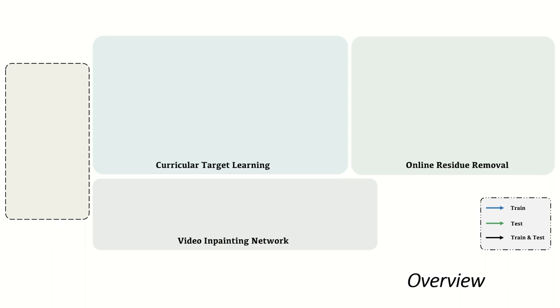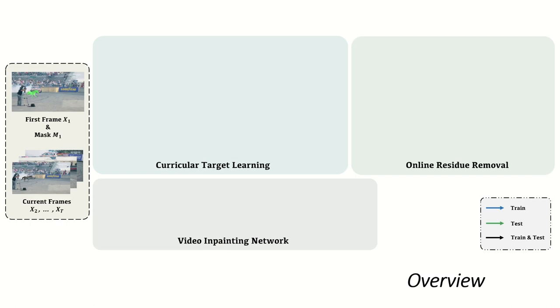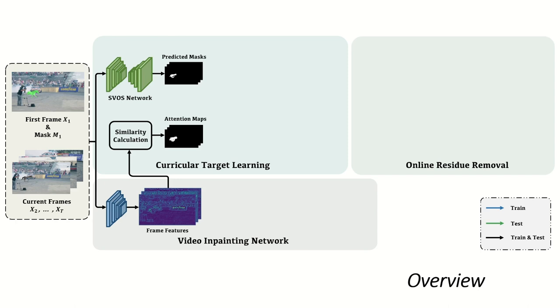Our framework consists of a curricular target inactivation and a residue removal modules. Given a video and a first-frame target mask, the encoder of the inpainting network first extracts the features of each frame.